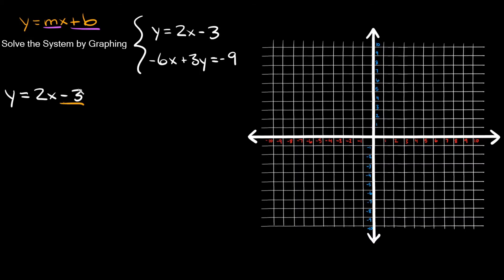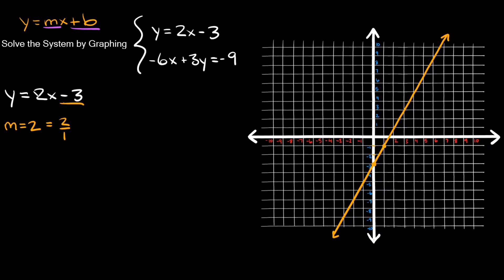Starting with y equals 2x minus 3: the y-intercept is negative 3, so plot a point on the y-axis at negative 3. The slope is 2, or two over one — go up two and over one. Plot the second point and draw a straight line.